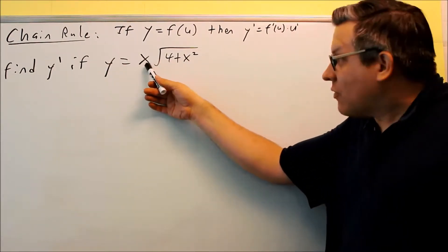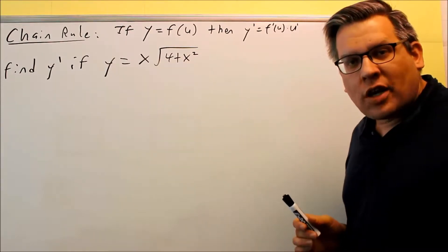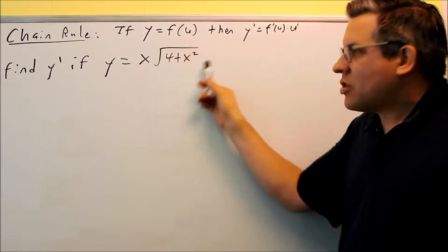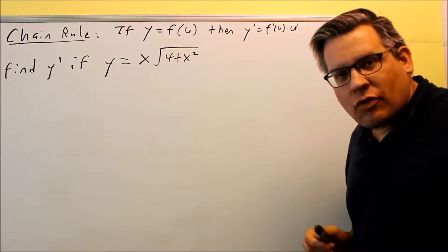I have a product here because I have two different things multiplied together. When I get to the part of the problem where I have to take the derivative of the second part, that's the one that's going to involve a chain rule.